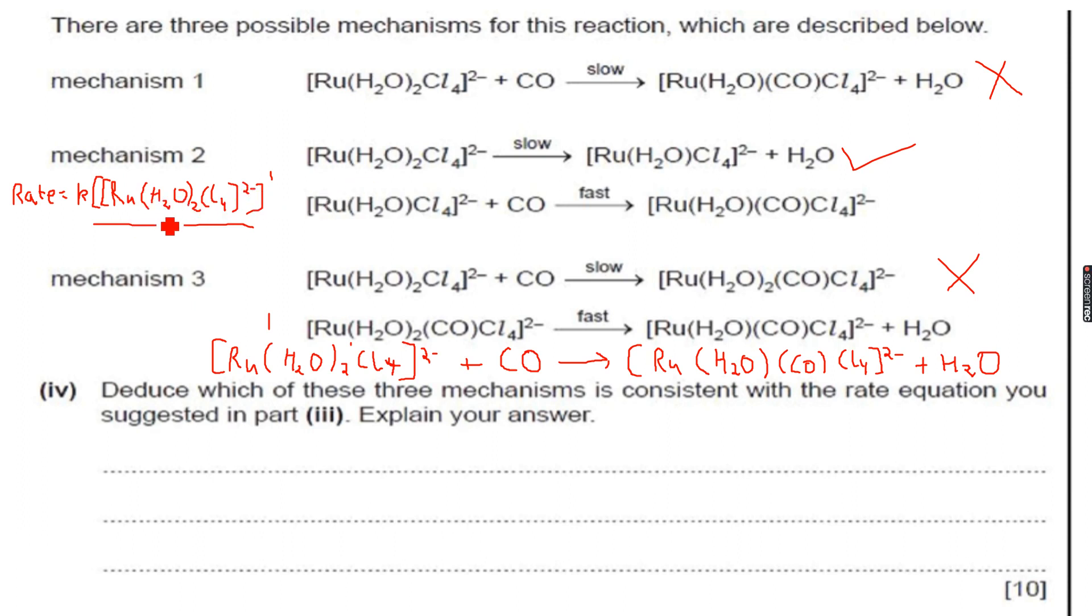Because only the ruthenium complex ion occurs in the rate equation, only that will react in the slowest step. So we can see that only this has reacted in the slowest step. We are clear with this now.